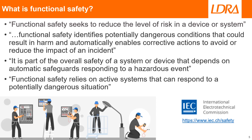According to the IEC, functional safety seeks to reduce the level of risk in a device or system. It identifies potentially dangerous conditions that could result in harm and automatically enables corrective actions to avoid or reduce the impact of an accident. It is part of the overall safety of a system that depends on automatic safeguards responding to a hazardous event, relying on active systems that can respond to a potentially dangerous situation.